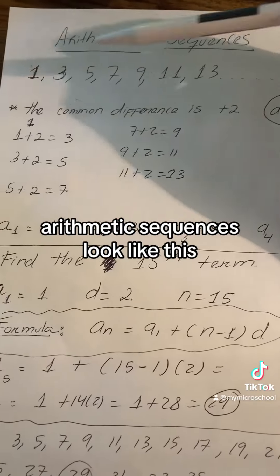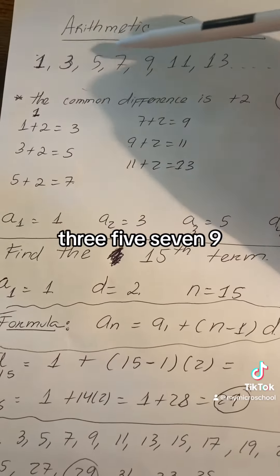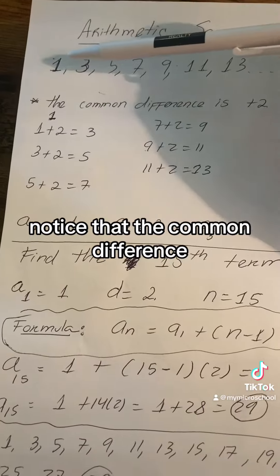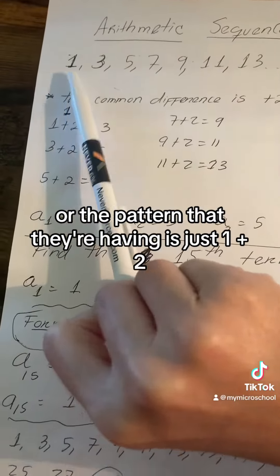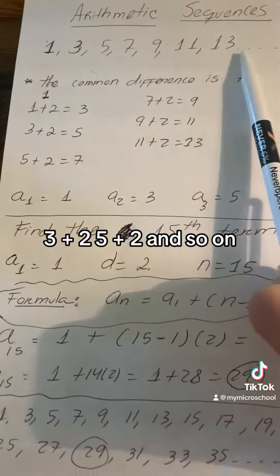Arithmetic sequences look like this. For example, you have 1, 3, 5, 7, 9. Notice that the common difference or the pattern they're having is just 1 plus 2, 3 plus 2, 5 plus 2, and so on.